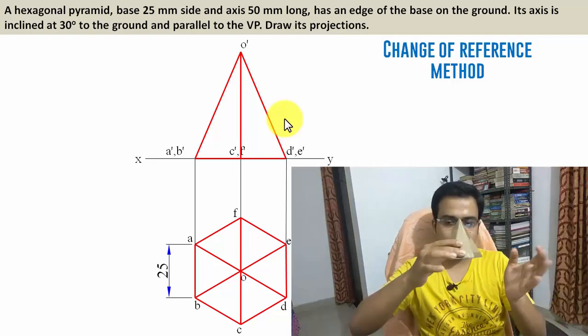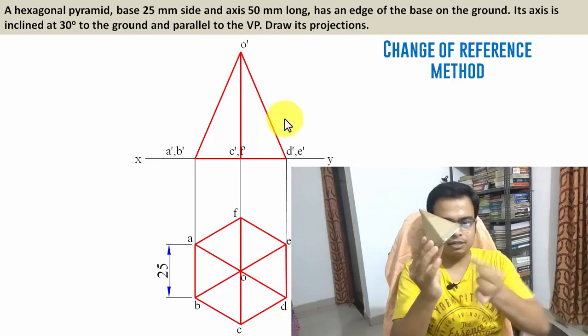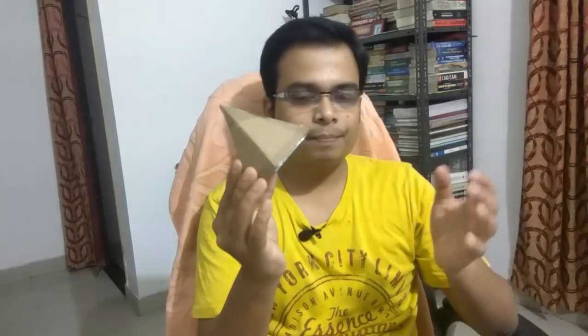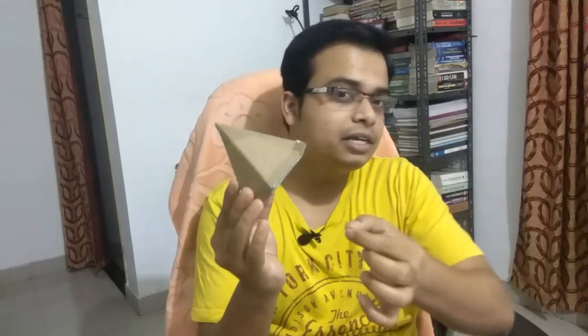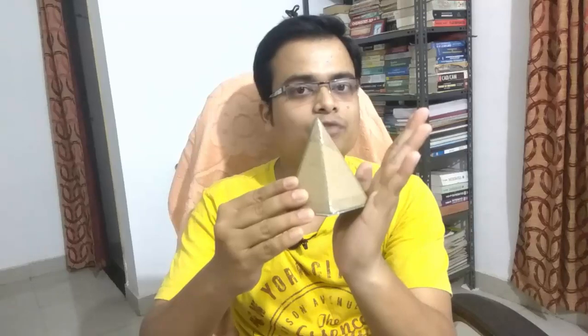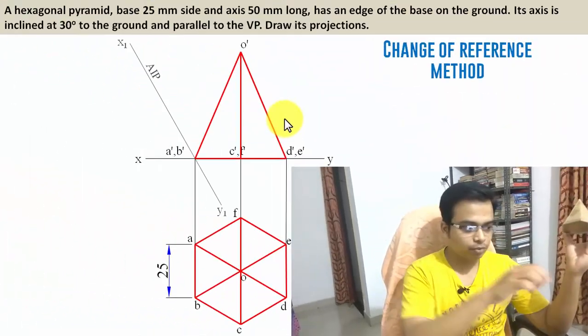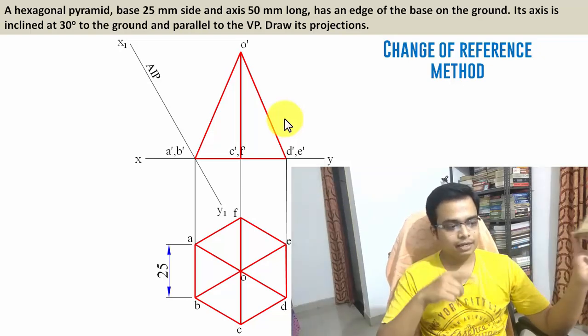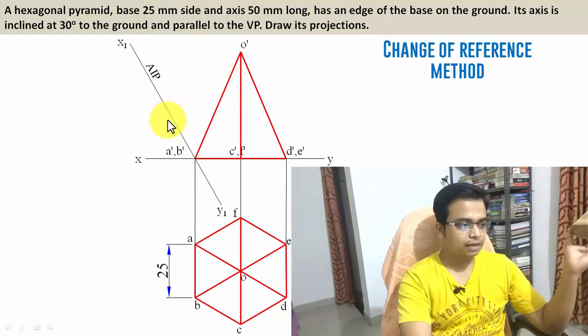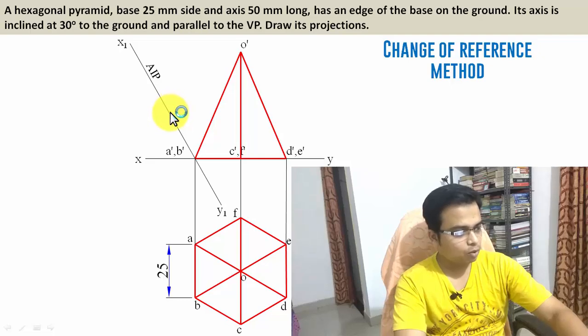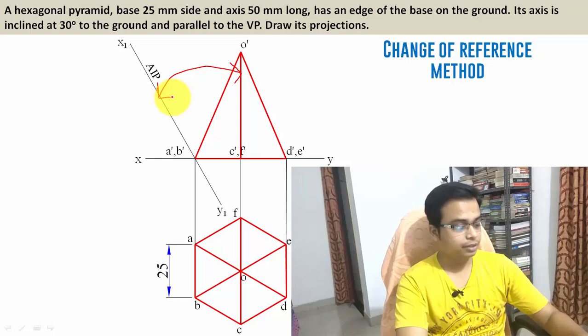As far as the change of reference method is concerned, instead of inclining the axis at 30 degrees with the horizontal plane, what we'll do is let the object remain in the initial position and have a reference plane making an angle of 30 degrees with the axis itself. That is essentially an auxiliary inclined plane. This angle between the auxiliary inclined plane and the axis is going to be equal to 30 degrees.